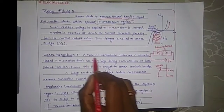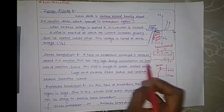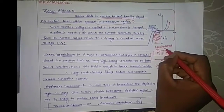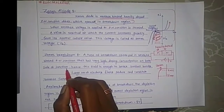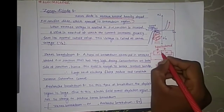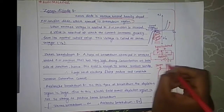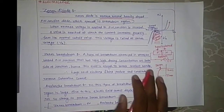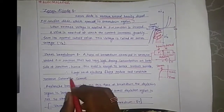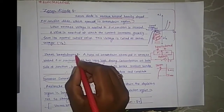Zener breakdown is a type of breakdown observed in a reverse biased PN junction that has a high doping concentration on both sides of the junction. When we apply reverse bias to a heavily doped PN junction, the electric field generated in the depletion region is strong enough to break covalent bonds. This produces a large number of electrons and holes, which constitute the reverse saturation current. This is known as Zener breakdown.